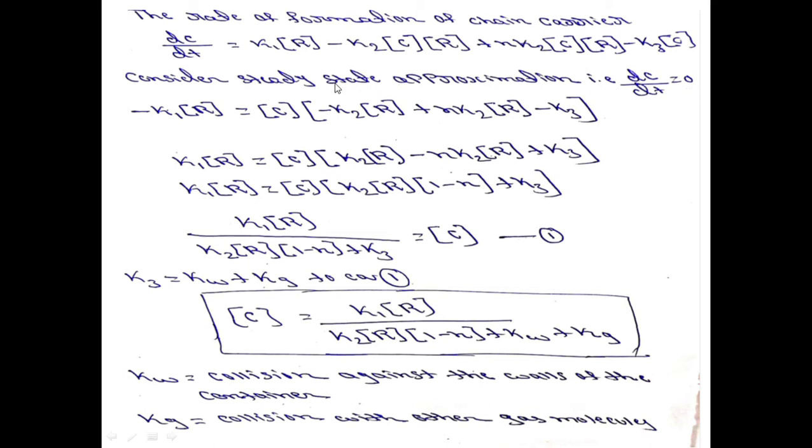Consider the Steady State Approximation, that is dC/dt is equal to zero. What does Steady State mean? The concentration of a free radical is constant at any instant. That is called the Steady State. That is, dC/dt is equal to zero.